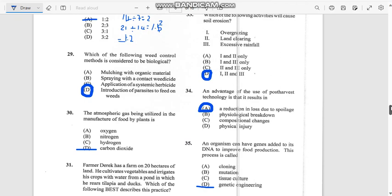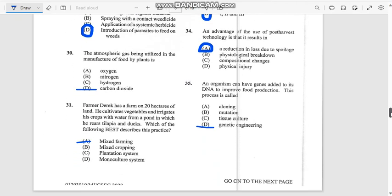Number 30: The atmospheric gas being utilized in the manufacture of food by plants. When food is forming, when light hits the plants, they need carbon dioxide (CO2). With sunlight, they produce food. That is the gas used by plants.